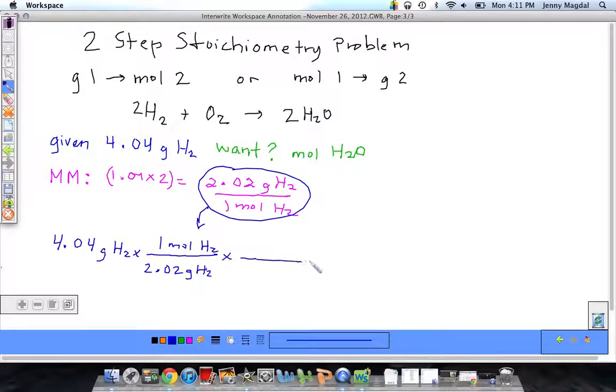Well, my final part is taking a look at my balanced reaction in a mole-to-mole ratio. So, I want moles of H2O, which I see here. There's 2 moles of H2O for every 2 moles of H2. So, on the bottom here, I'm going to put my 2 moles of H2, and on the top, 2 moles of H2O.